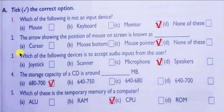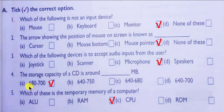Third: which of the following devices is used to accept audio inputs from the user? Answer is C — microphone. Fourth: the storage capacity of a CD is around blank MB — answer is A — 600 to 700 MB. Last: which of these is the temporary memory of a computer? Answer is B — RAM. These are your MCQs.